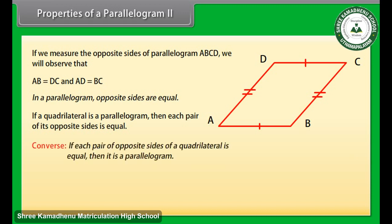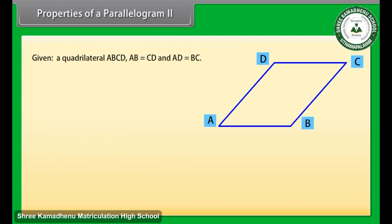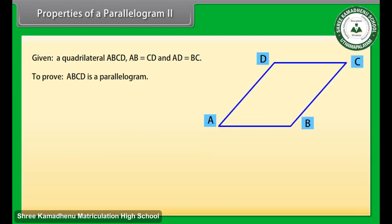The converse of this theorem results in another property. This says that if each pair of opposite sides of a quadrilateral is equal, then it is a parallelogram. Let us prove this theorem. Given a quadrilateral ABCD such that AB is equal to CD and AD is equal to BC. To prove ABCD is a parallelogram, draw a diagonal AC.